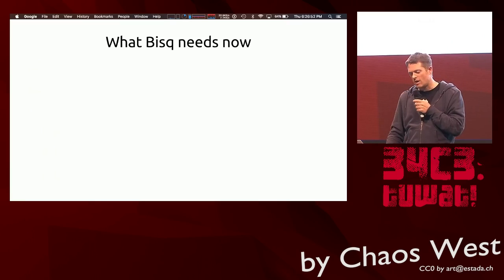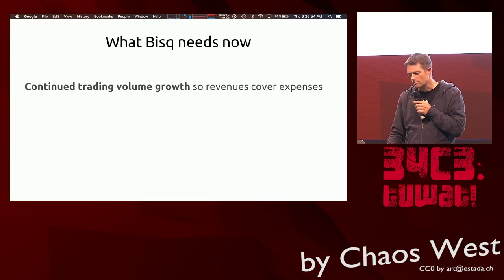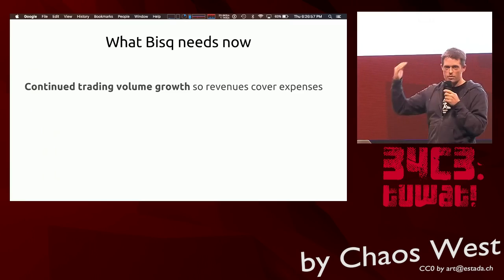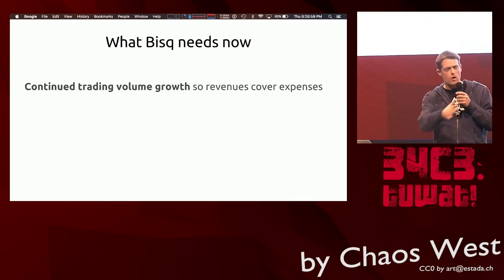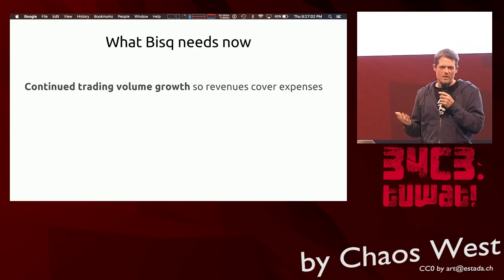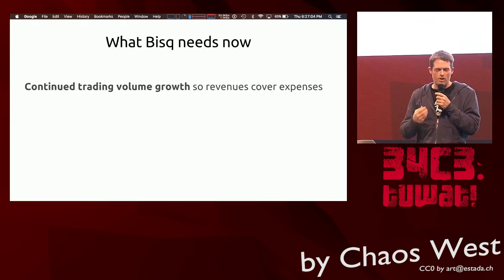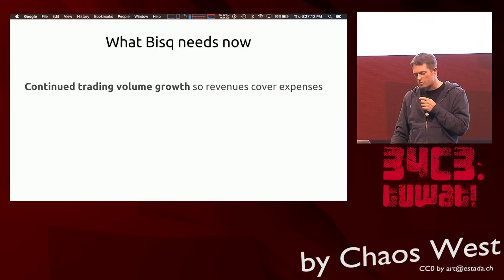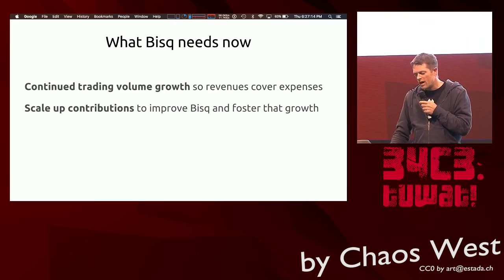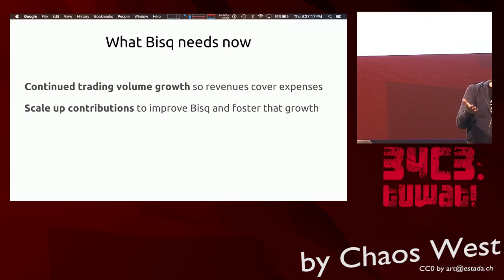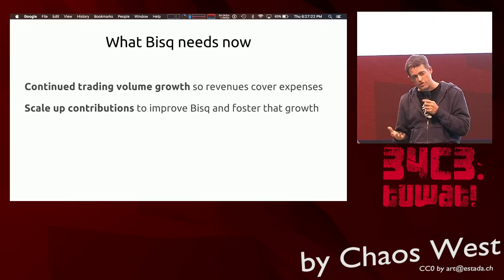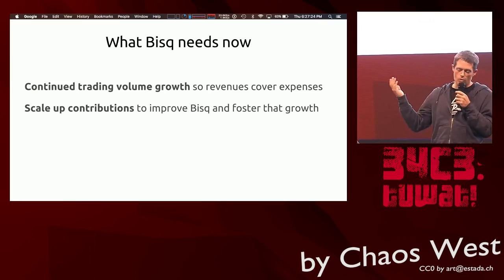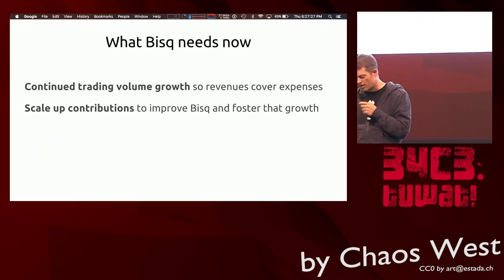What we need now: continued trading volume growth, and especially scaling up contributions — scaling up the group of people contributing to Bisq, working on Bisq, working with us through GitHub. The Bisq we have today wouldn't be able to scale up 10x or 100x — if for no other reason than we only have a handful of arbitrators right now. We need more people who can do arbitration in order to really scale up to anything near centralized exchanges. We need a decentralized compensation model to incentivize all those contributors, and a decentralized responsibility model to avoid censorship — if there's just one or two heads to cut off, there's a decent risk they will be.